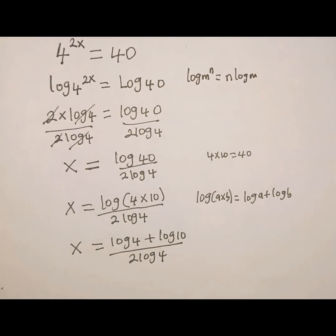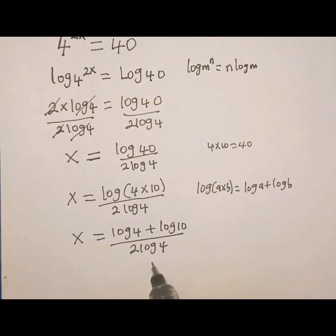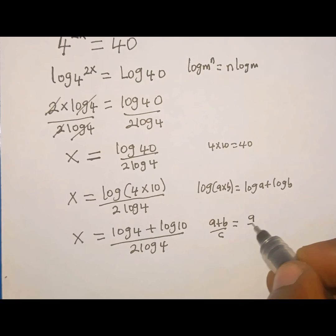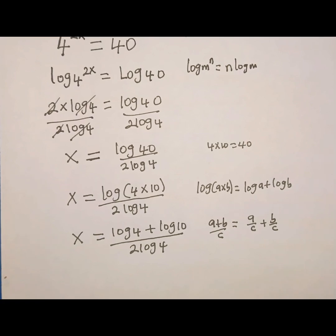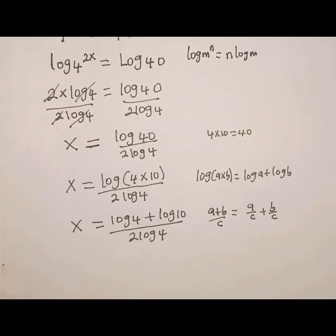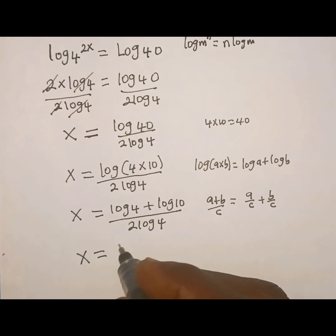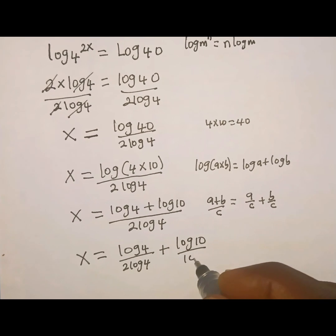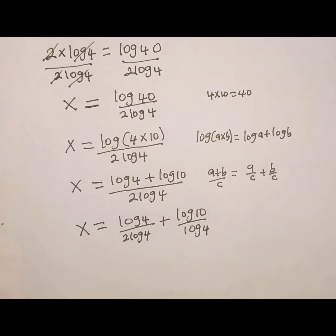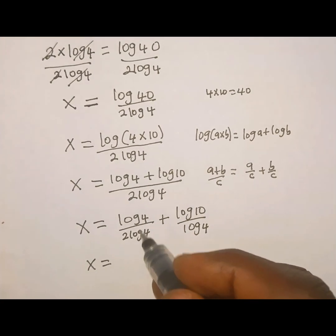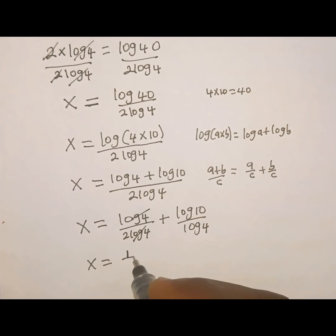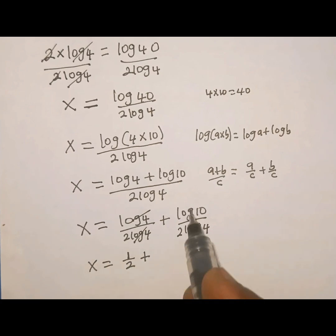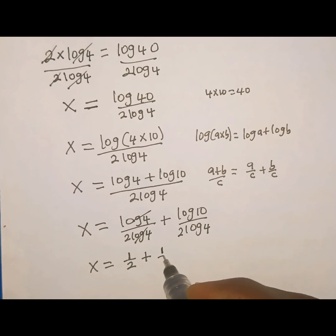The denominator is just 2 log 4, which is one term. We recall that when we have a plus b over c, this can be written as a over c plus b over c — they share the denominator. Applying this property, x equals log of 4 over 2 log 4, plus log of 10 over 2 log 4. We can now cancel: log 4 over log 4 cancels, leaving 1 over 2, plus log of 10 over 2 log 4.